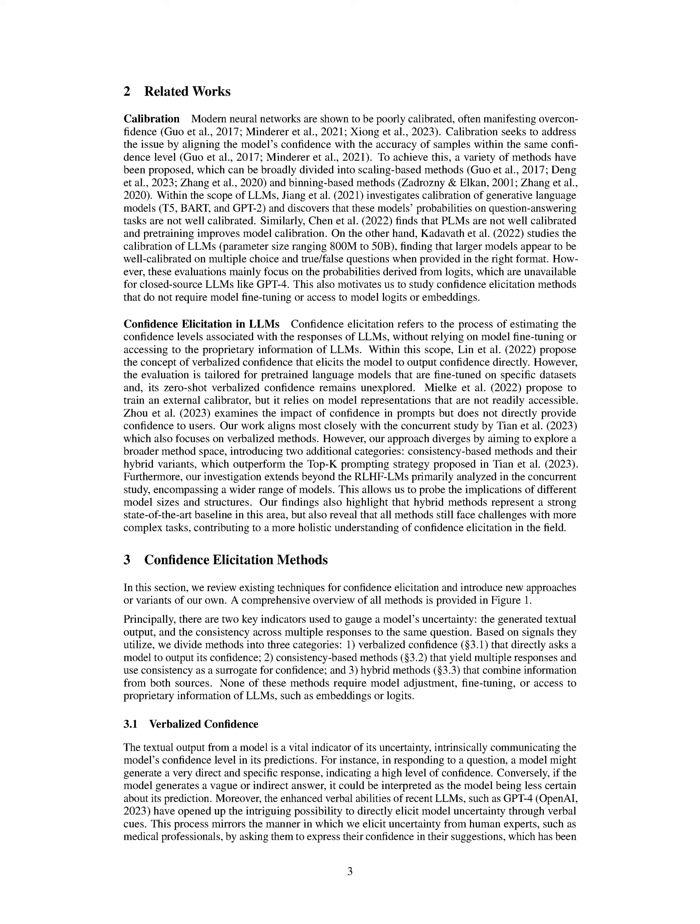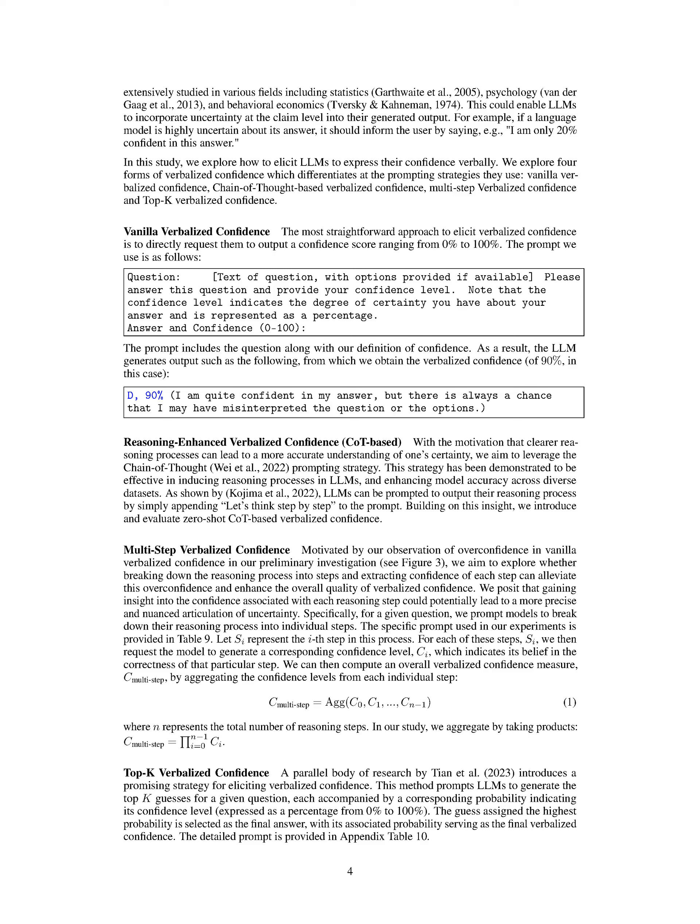This approach could allow LLMs to integrate uncertainty at the claim level into their generated responses. For instance, if a language model is not sure about its response, it could inform the user by saying something like, 'I am only 20% confident in this answer.' In this research, we're exploring four types of verbalized confidence that differ based on prompting strategies: vanilla verbalized confidence, chain-of-thought-based verbalized confidence, multi-step verbalized confidence, and top-K verbalized confidence.